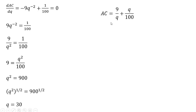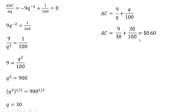Now we plug Q equals 30 back into our average cost equation. We see that average cost at its minimum point — when the slope of average cost is zero — occurs at 60 cents per unit.